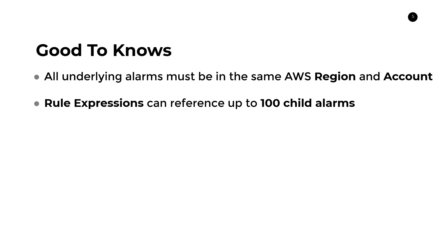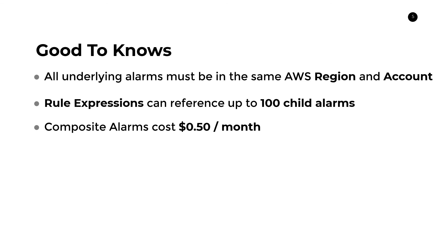Lastly, in terms of pricing: composite alarms cost an additional 50 cents per month per alarm. This is in addition to the child alarms — normal CloudWatch alarms cost 10 cents per month each. So if you have a composite alarm with three child alarms, that's 50 cents plus 10 cents times three, which equals 80 cents per month total. Next we're going to do a walkthrough in the AWS console — I'll link that video when it's available. Thanks so much for watching.